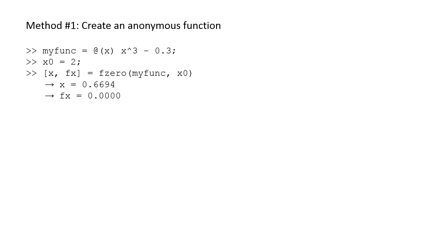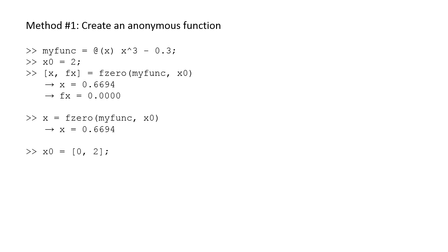Most of the time, we are not interested in the value of the function at the root estimate, and we will omit fx on the left side. If we type x = fzero(myfunc, x0), we only store the estimate of the root. If you know the root lies between two values of x, you can replace the initial guess with an array containing the limits of possible root values. Set x0 = [0, 2] and execute x = fzero(myfunc, x0) again. We obtain the same value as when we only specified an initial value.